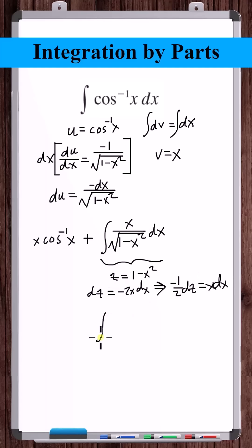Making the substitution, the integral of z to the minus 1 half is z to the 1 half divided by 1 half. Multiplying that by minus 1 half gives minus square root of z.